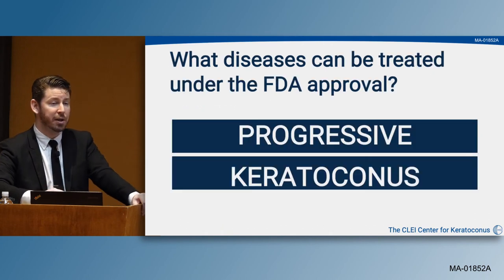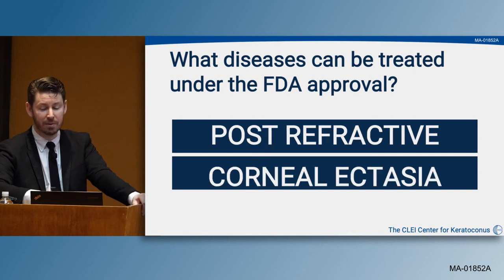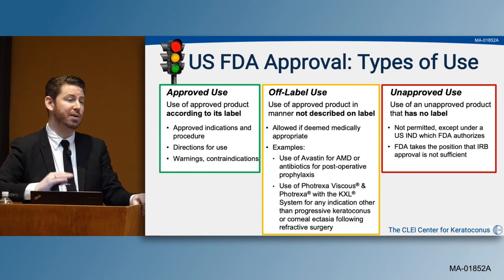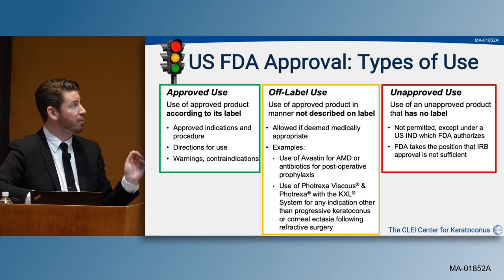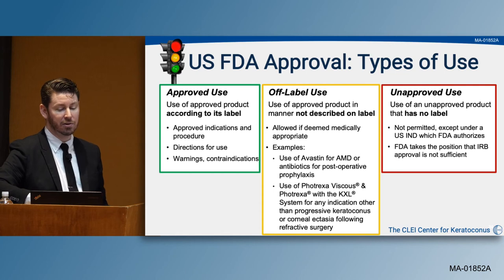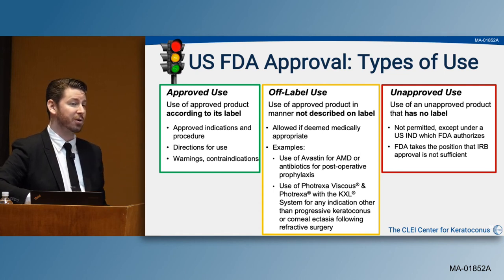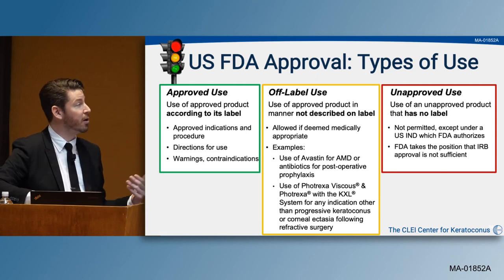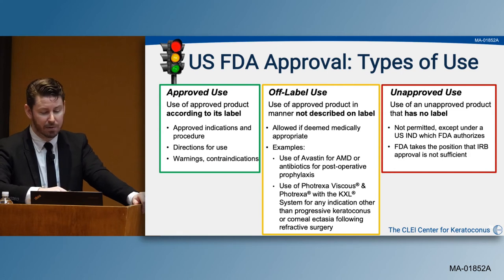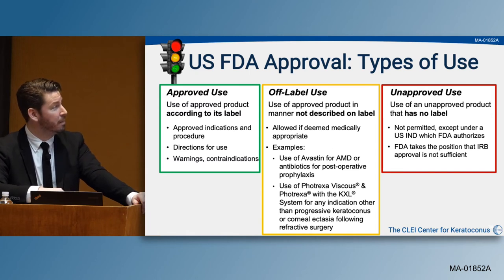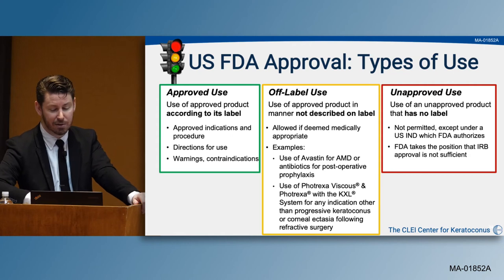FDA-approved indications include progressive keratoconus and post-refractive corneal ectasias. The FDA approves devices and drugs, not procedures, so we're looking at the approved product according to its labeling and indications. Off-label use includes conditions like pellucid marginal degeneration or ectasia after RK. Unapproved uses with no label have not been evaluated for safety and efficacy and require an IND designation in the United States.